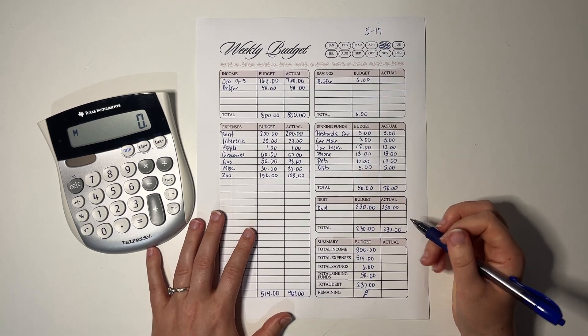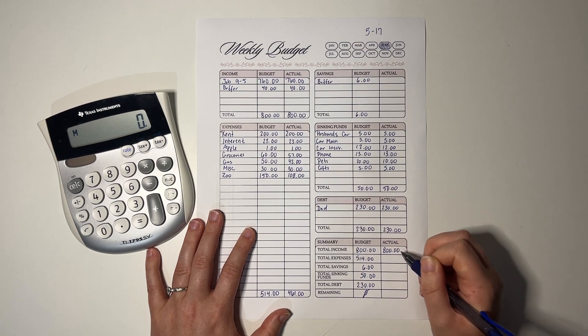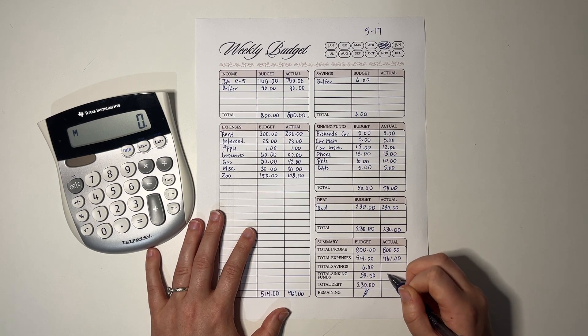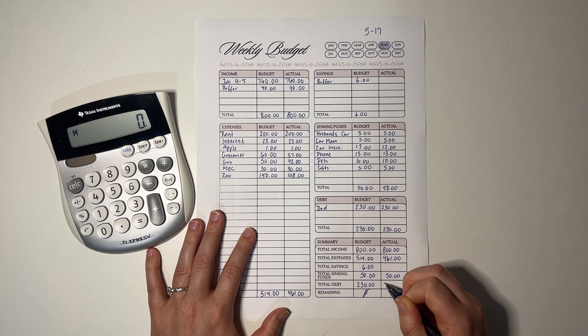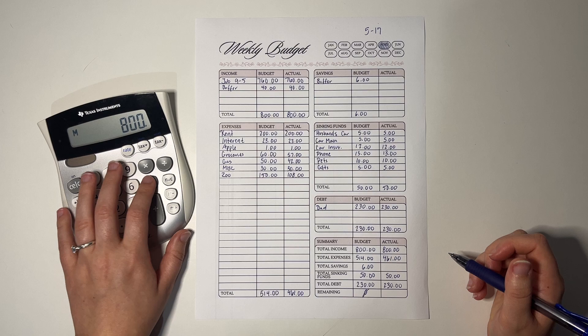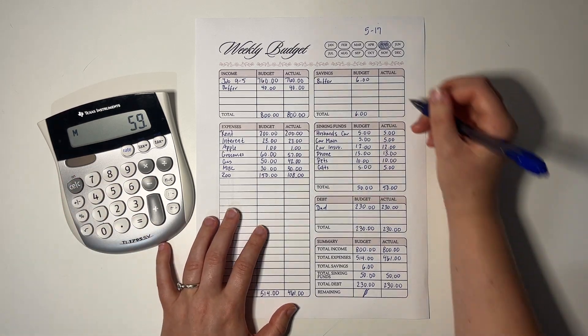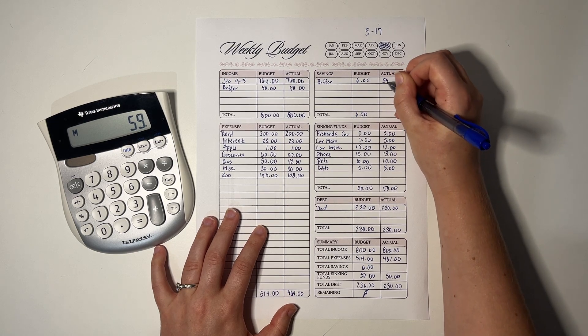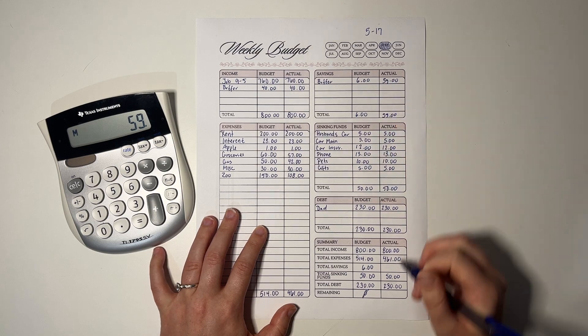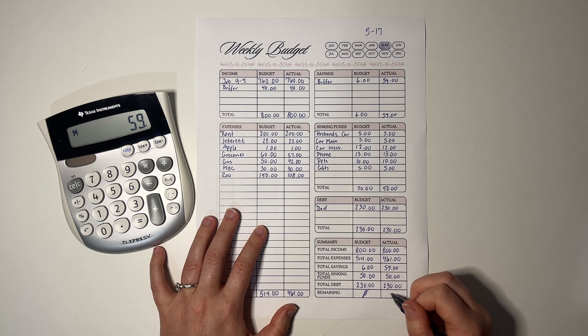So, let's go at it. We had $800 for income this week. Expenses was a little less, $461. Sinking funds is always $50. Debt to my dad was $230. So, we were able to put aside $59. That is a lot more than $6. Now, some of this, you'll see this rollover cash when I do my cash stuffing next week for the next week.